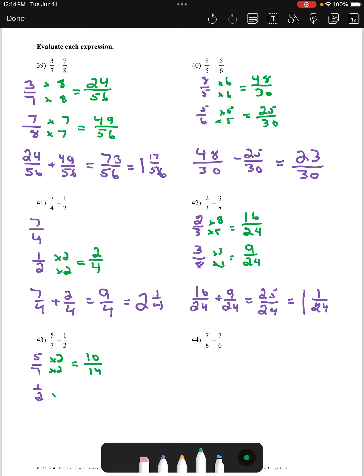For number 43, denominators are 7 and 2. The smallest number that they can agree on is 14. So our first fraction is going to need multiplied by 2s to become 10/14. Our second fraction is going to need multiplied by 7s to become 7/14. So we have 10/14 plus 7/14. That is 17/14. We can take a 14 away from 17. And when we do, we have 3 left behind.